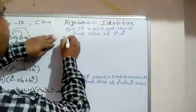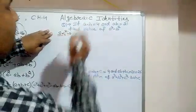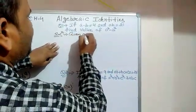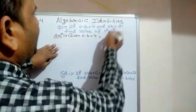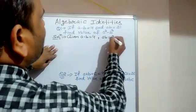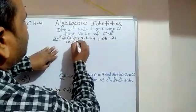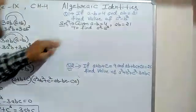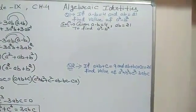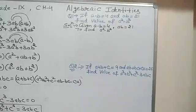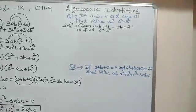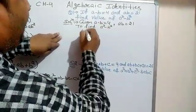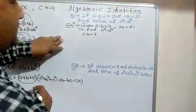Our first question is: if a minus b equals 4, and ab equals 21, we have to find the value of a cube minus b cube. We can solve this question by two methods, but we will try one of the easy methods. We have to find a cube minus b cube, and a minus b is given to us as 4.